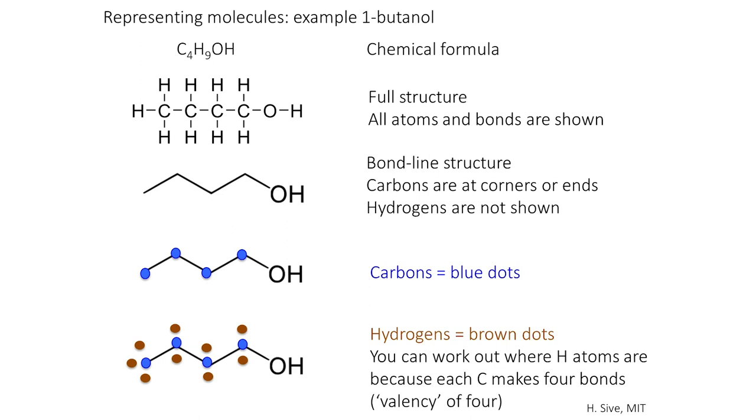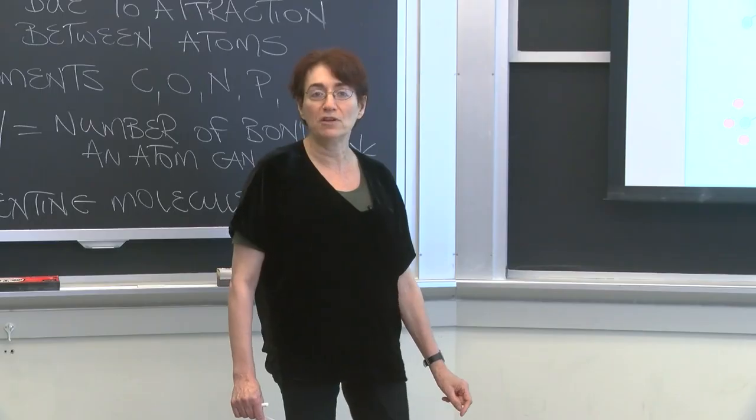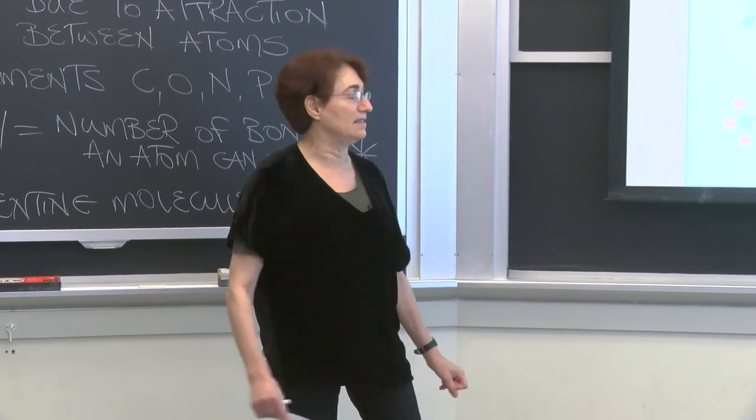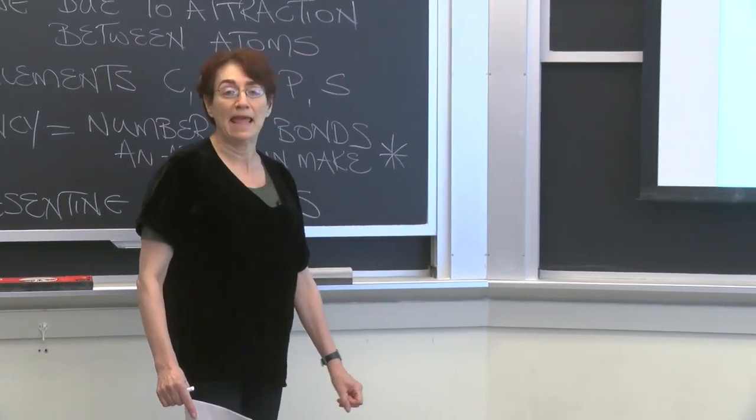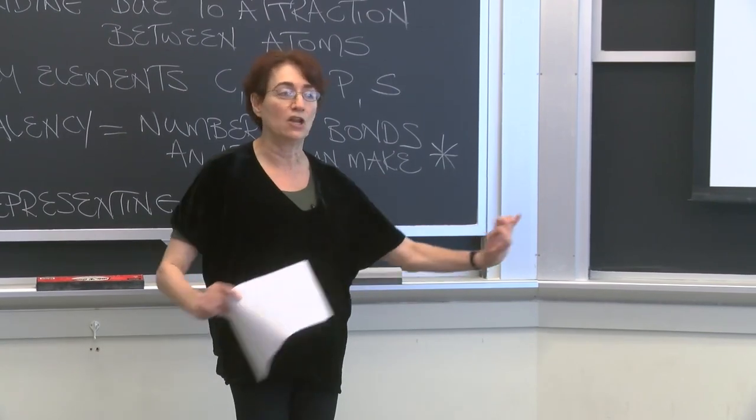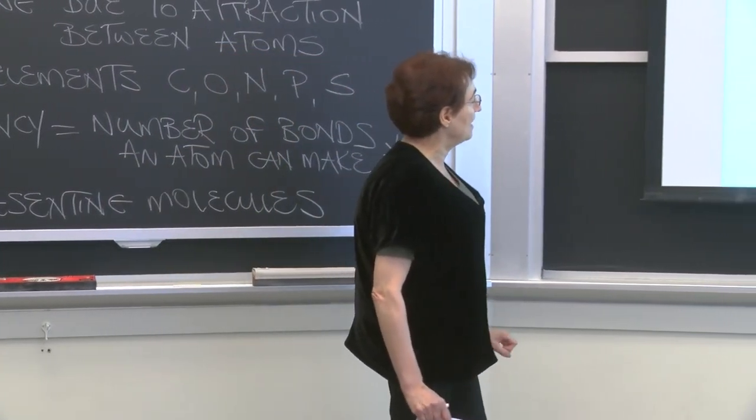And then we can put red dots for each of the hydrogens. And you can figure out from this where the hydrogen atoms lie because of this concept of valency. Carbon has a valency of four. Every carbon atom can make four bonds. This is the reason that it is a pivotal atom in life, because it can make lots of bonds.